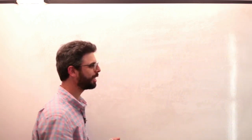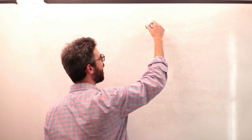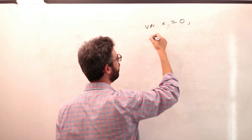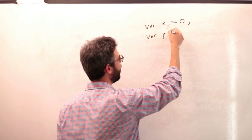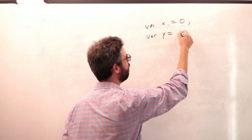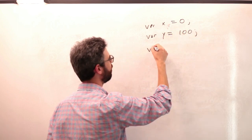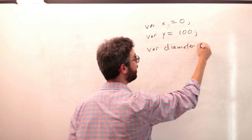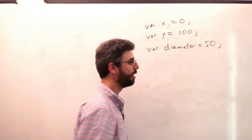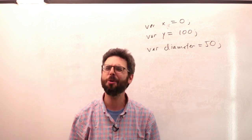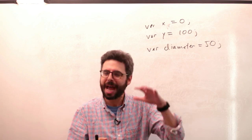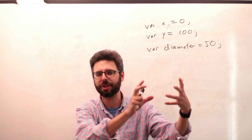So let's just say for the moment that I have a variable X and it has an initial value of 0. And I have a variable Y and it has an initial value of 100. And I have a variable diameter, which has an initial value of 50. So these three variables, they go together, right? I'm using them for that circle.